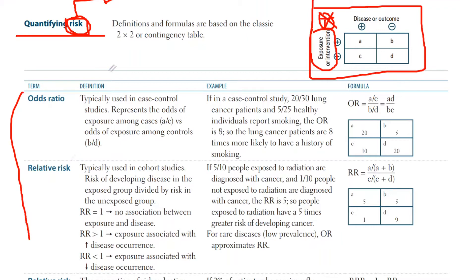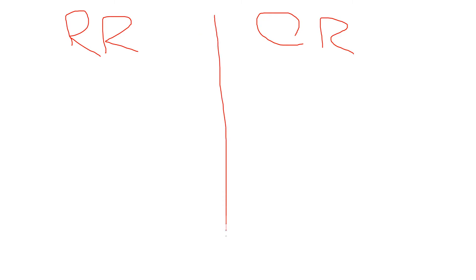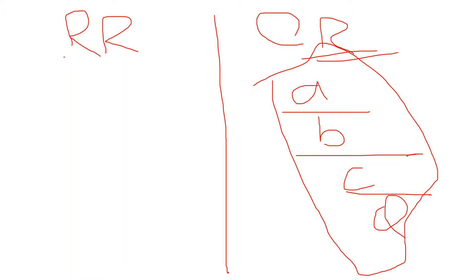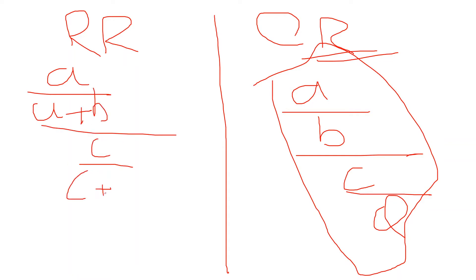They have a small distinction between them which will be clear when we talk about their formulas. The only difference is that one uses proportions and one uses ratios. Odds ratio uses ratios, so the formula goes: a/b divided by c/d — very simple and easy to remember. Relative risk uses proportions: (a over a+b) divided by (c over c+d).